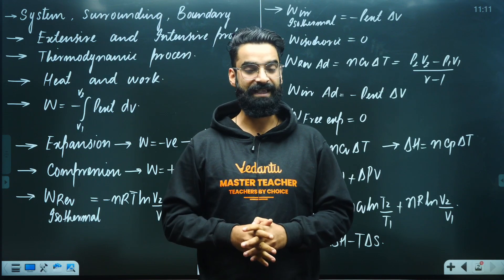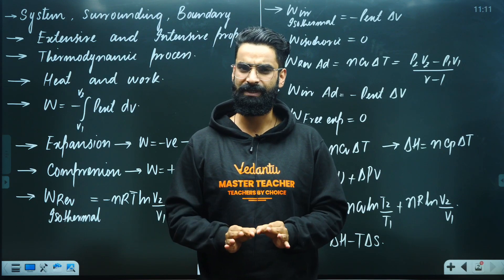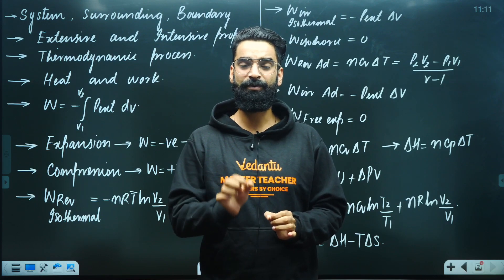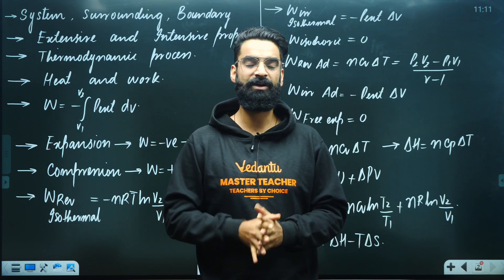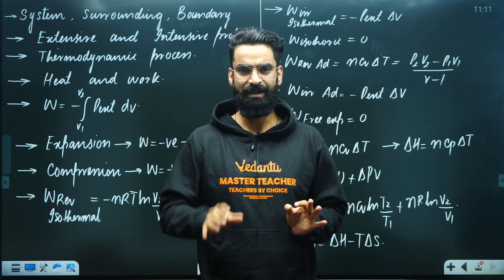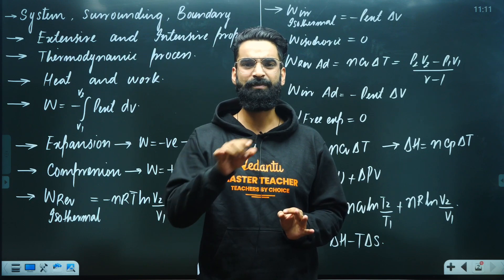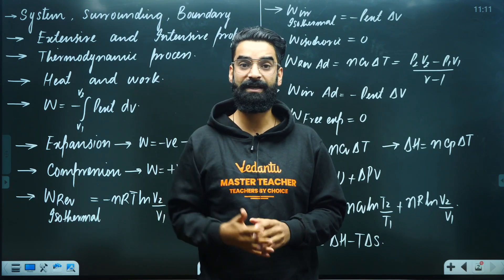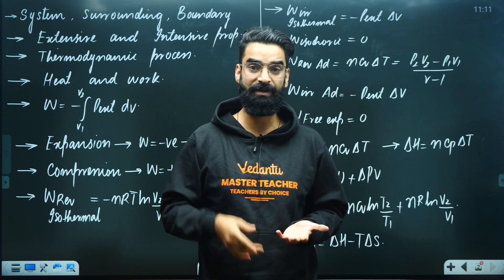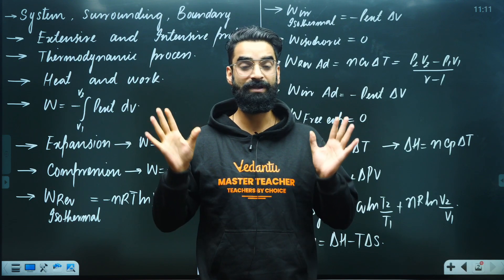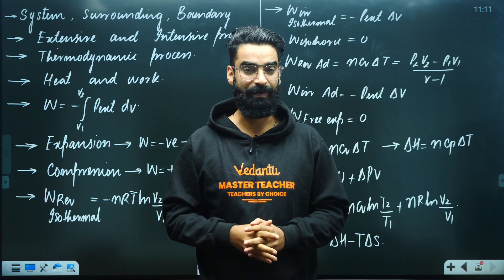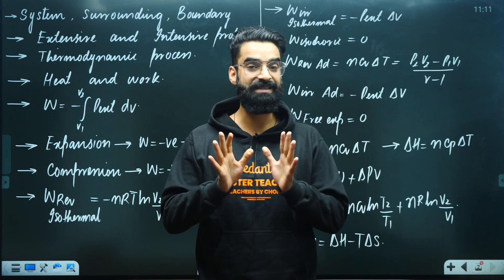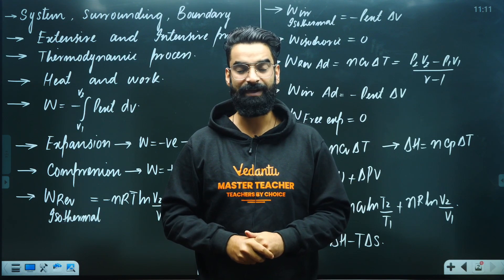We also discussed the cyclic process. A cyclic process is one in which the system returns to its initial state. For a cyclic process, the change in the value of any state function is always zero. So ΔU_net = 0, ΔH_net = 0, ΔG_net = 0 — in short, the change in the value of any state function for any cyclic process is always taken to be zero.